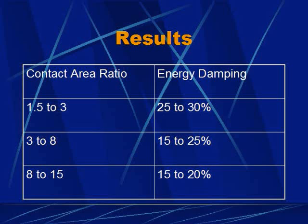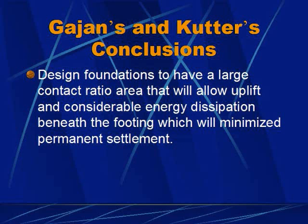When the contact area ratio is greater than 8, the amplitude of rotation during slow lateral cyclic loading does not affect the settlement of the footing. Settling during dynamic loading tests over the same contact area ratios was larger than settling during slow lateral cyclic loading. The moment capacity of foundations during dynamic tests was up to 25% less than those found during slow lateral cyclic loading over the same range of contact area ratios. In conclusion, Gajan and Cutter found that it would be beneficial to design footings to have a large contact area ratio that would allow uplift, considerable energy dissipation beneath the footing, and minimize permanent settlement.